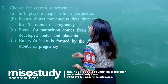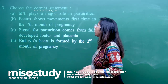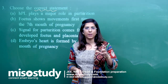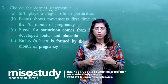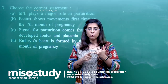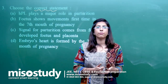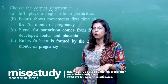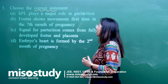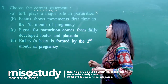Now we have to choose a correct statement. Four options are given. The first: HPL plays a major role in parturition. HPL stands for human placental lactogen — its function is to help in the process of lactation so that a baby can feed on the mother's milk. So this is not correct for parturition; the signal for parturition comes from the embryo. Option B: the fetus shows movement first time in the seventh month of pregnancy — that is also incorrect; it shows movement in the fifth month.